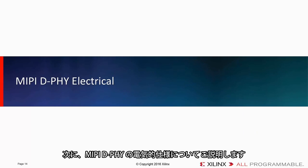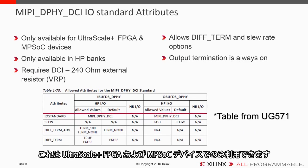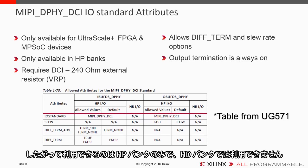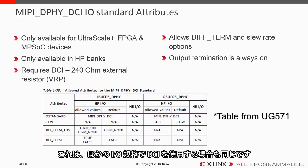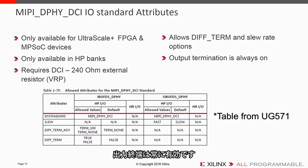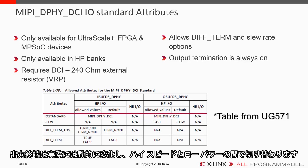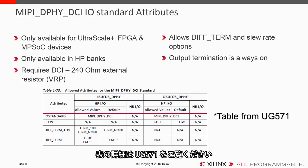Now let's talk about the MIPI DeFi electrical. The MIPI DeFi has a specific I/O standard called MIPI DeFi DCI, only available in UltraScale Plus FPGA and MPSOC devices. It is only available in HP banks — it cannot be used in HD banks. This I/O standard requires DCI and a 240-ohm external resistor on the VRP pin, like you would use DCI on any other I/O standard. The standard also allows diff-term and slew rate options. The output termination is always on and dynamically switches between high-speed and low-power mode. The allowed attributes table for MIPI DeFi DCI can be found in UG571.